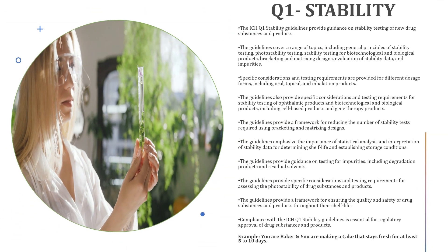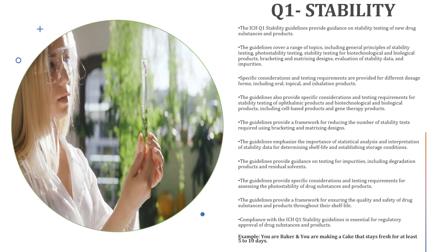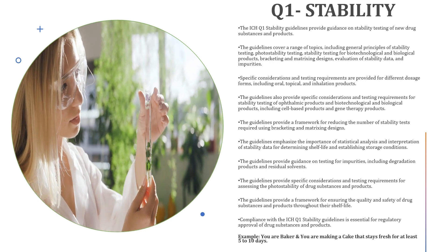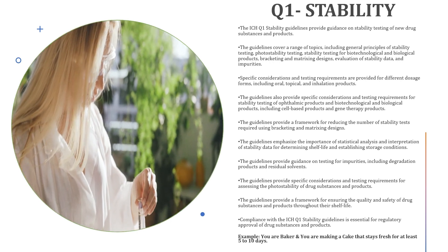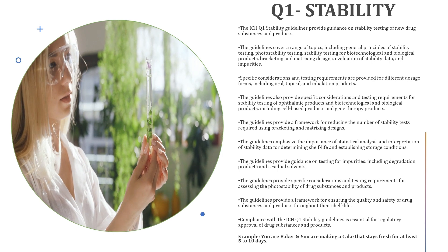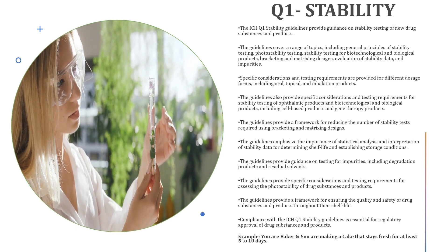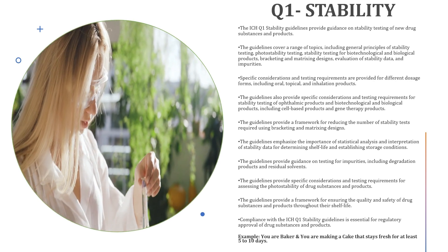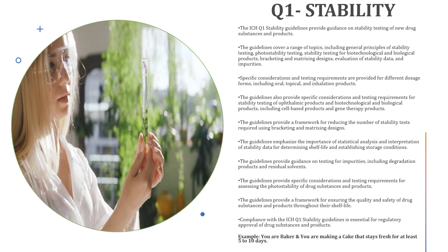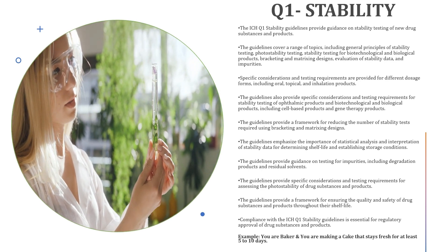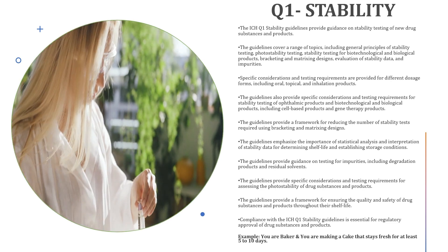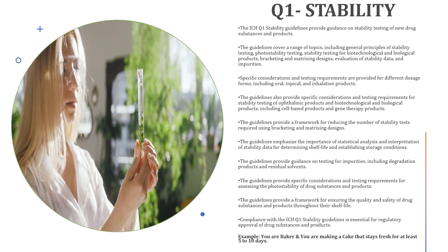The ICH Q1 stability guidelines provide guidance for pharmaceutical companies on how to conduct stability testing for new drug substances and products. The guidelines help ensure that medicines remain safe and effective throughout their shelf life by setting standards for testing conditions and data analysis. The guidelines cover various topics such as photo stability testing, evaluation of stability data, and stability testing for new dosage forms.